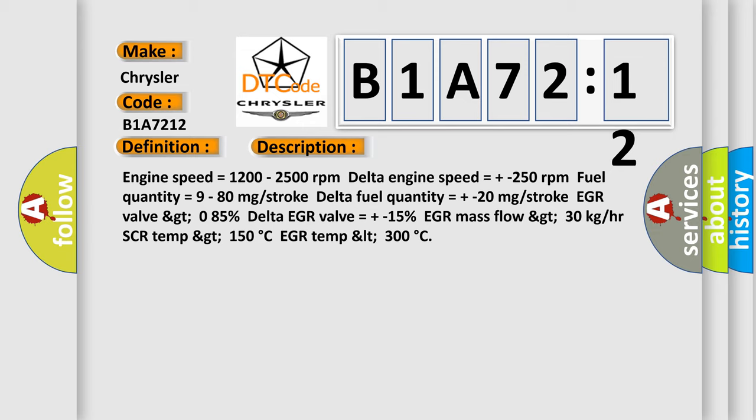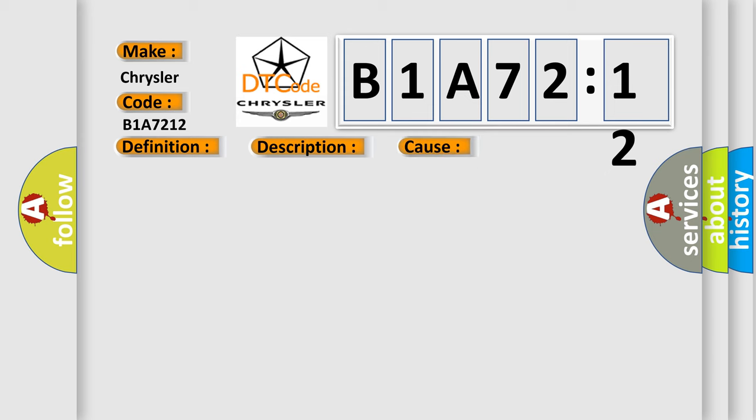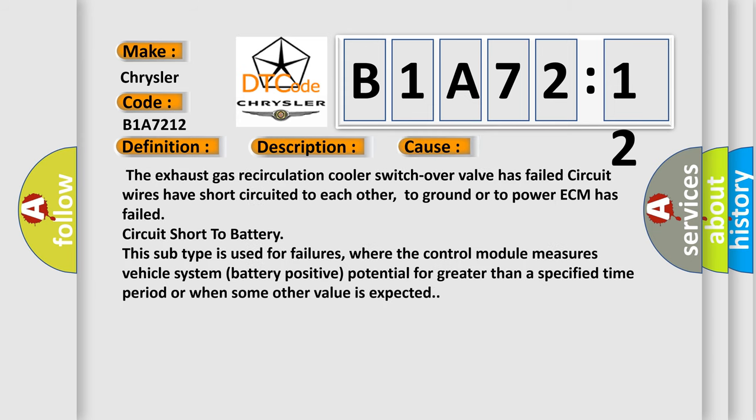This diagnostic error occurs most often in these cases. The exhaust gas recirculation cooler switch-over valve has failed, circuit wires have short circuited to each other, to ground or to power, ECM has failed, circuit short to battery. This subtype is used for failures where the control module measures vehicle system battery positive potential for greater than a specified time period or when some other value is expected.